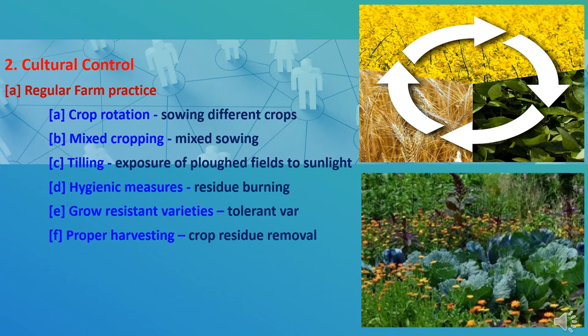Second is mixed cropping — when a few crops are sown mixed, the pest of one crop finds hindrance in reaching its host. Third is tilling — after harvesting, the field should be ploughed to expose the development stages of insects, which may be killed by direct sunlight, natural enemies, or physical injuries. Fourth is hygienic measures — after harvesting, leaves, twigs, fruits, weeds, and other crop residue should be removed and burned.